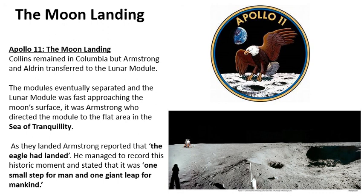The modules separated and the lunar module was fast approaching the moon's surface — broadcast live on television. Neil Armstrong guided the module down; it was crucial he could land it properly on the moon so it wouldn't be damaged and they could fly back to the command module. The area he landed on was a flat area called the Sea of Tranquility. The picture in the bottom right was taken by Neil Armstrong — you can see the surface of the moon with the lunar module in the background.